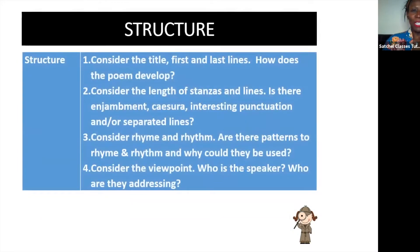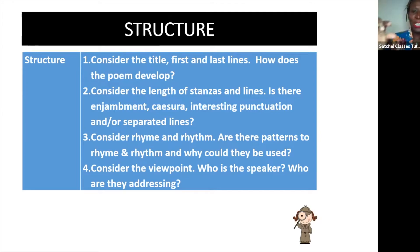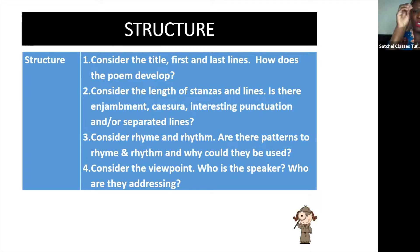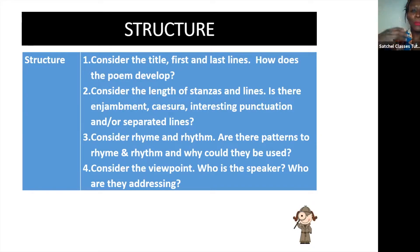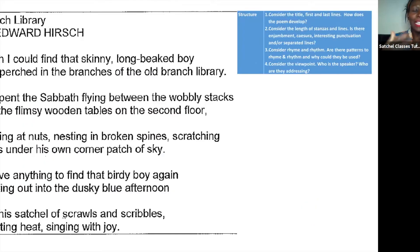Structure: when you have an unseen poem, think about the structure — the beginning, the middle and the end. What is the title? How does it start? How does it end? How does it develop? Look at the stanzas and the line lengths. Are there regular line lengths? Is there enjambment where the line is continued? Is there caesura where it stops in the middle of the line? Is there interesting punctuation or separated lines? What about rhythm and rhyme — are there patterns? And what about the viewpoint — who's the speaker and who are they addressing?